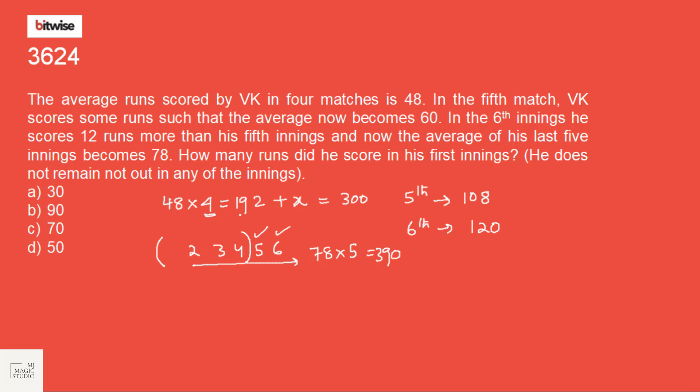Very good. So the total of the first 4 was 192. So suppose this is F. So 2, 3, 4 is 192 minus F plus 5 is 108 plus 120. This is equal to 390. So we have got here 420 minus 390 equals the score in the first inning. That is 30. Option A is the pick.